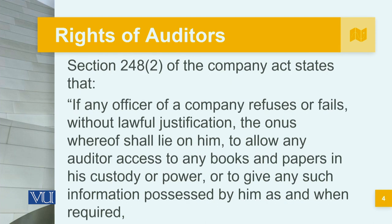Under Section 248-2 of the Companies Act, if any officer of a company refuses or fails without lawful jurisdiction to allow any auditor access to any books and papers in his custody or power, or to give any such information possessed by him as and when required, the auditor can write a report noting that employees were evasive and not cooperating, which would lead to many fines for that particular organization.